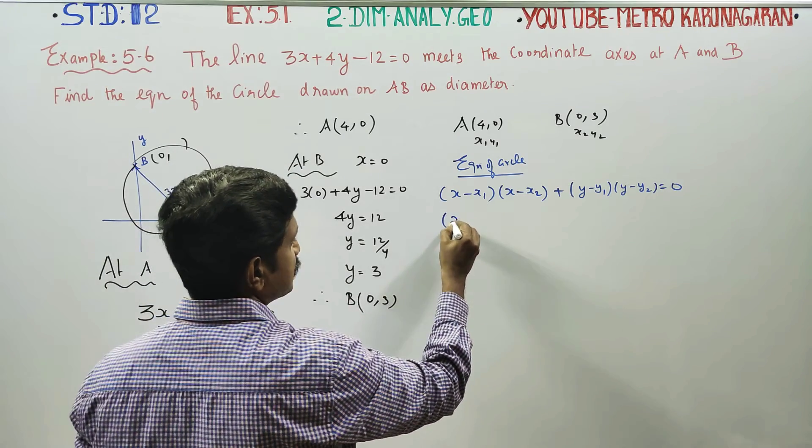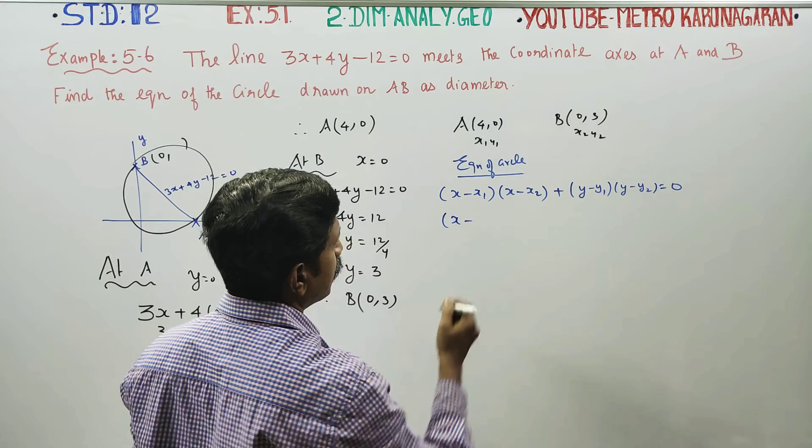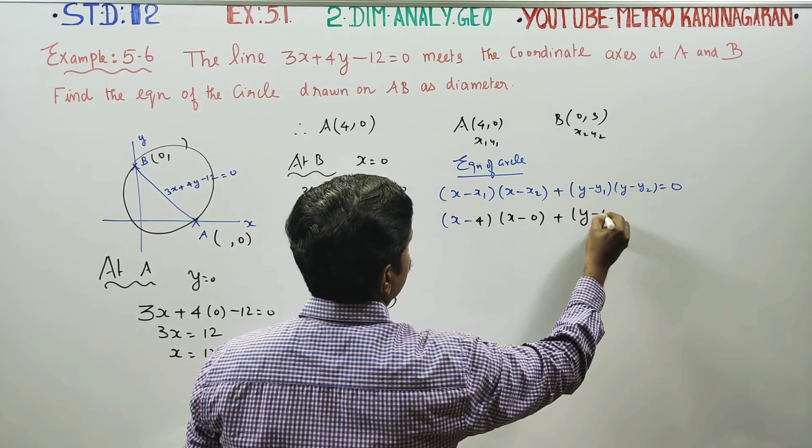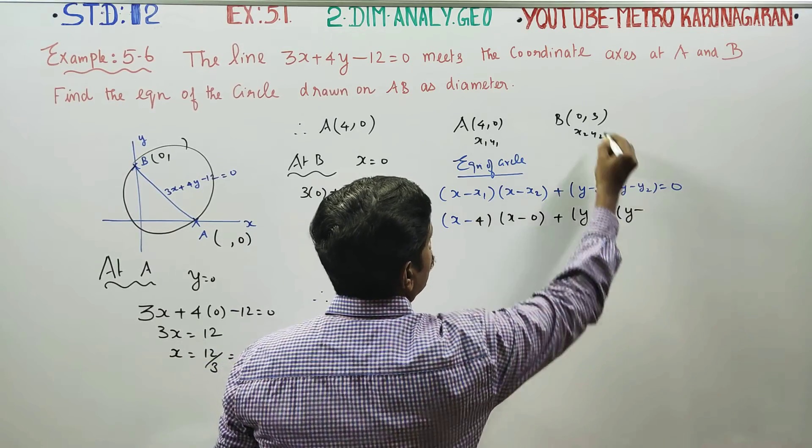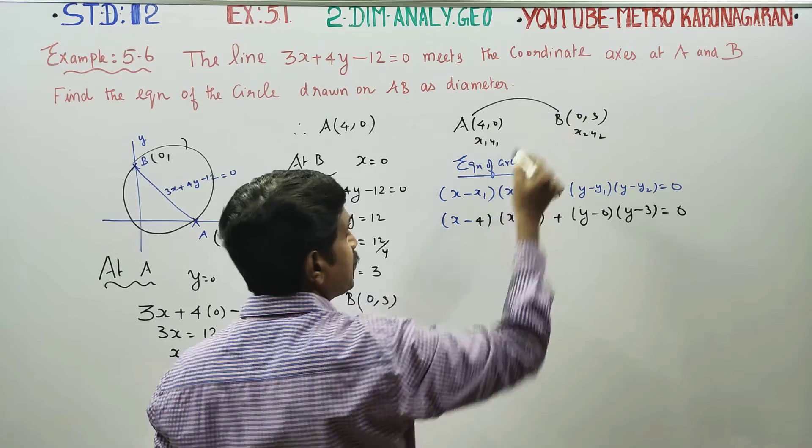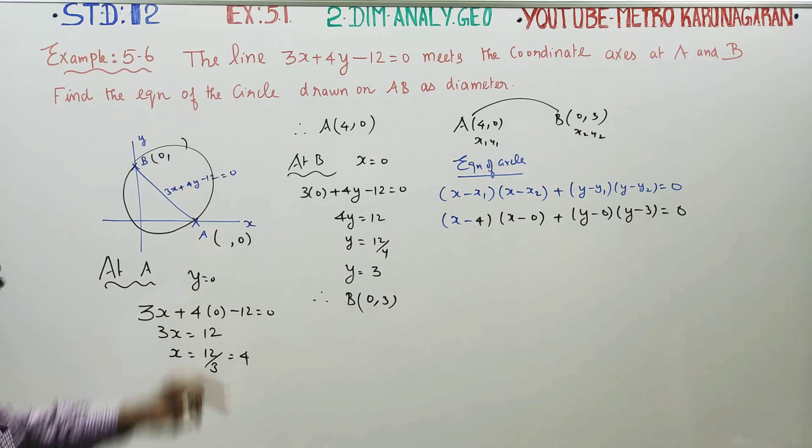Substituting the values: (x - 4)(x - 0) + (y - 0)(y - 3) = 0. These are the extremities of the diameter, the two endpoints, which is why we use this form of the circle equation.